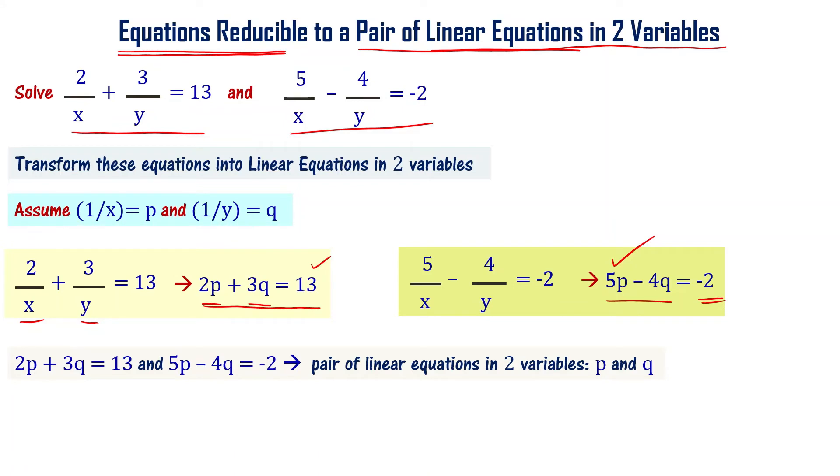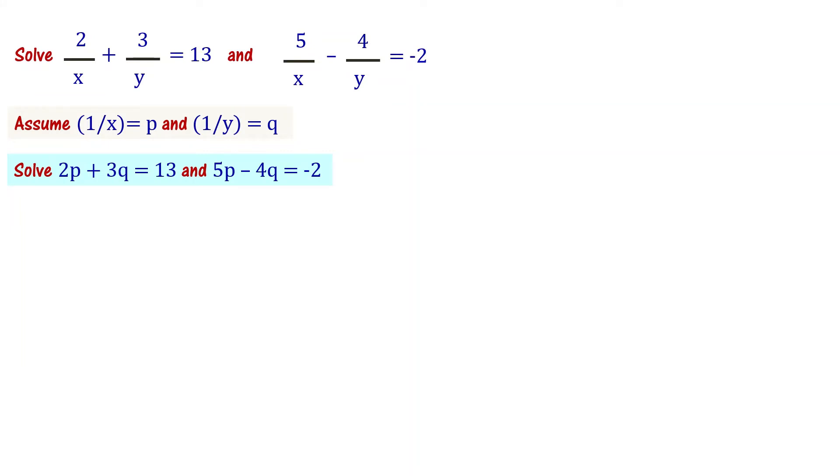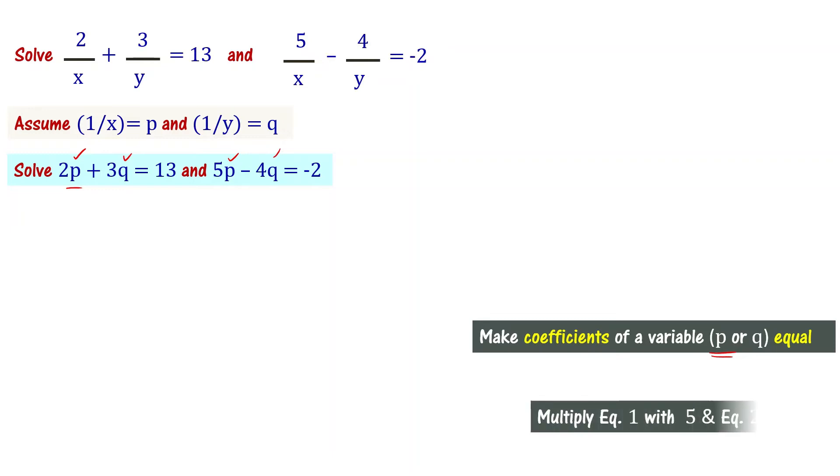We can solve these pair of equations, pair of linear equations in two variables pq. We can use any of the methods we learnt: substitution method, elimination method or graphical method. Let me use elimination method. In elimination method, the first step is make the coefficients of a variable equal. We have two variables, p and q. Take one variable, either p or q. Make the coefficients in both equations the same. To do that, multiply equation 1 with 5 and equation 2 with 2. The p coefficient in the first equation is 2, and in the second equation it's 5. Multiplying by 5 and 2 respectively, both equations will have p coefficient 10.